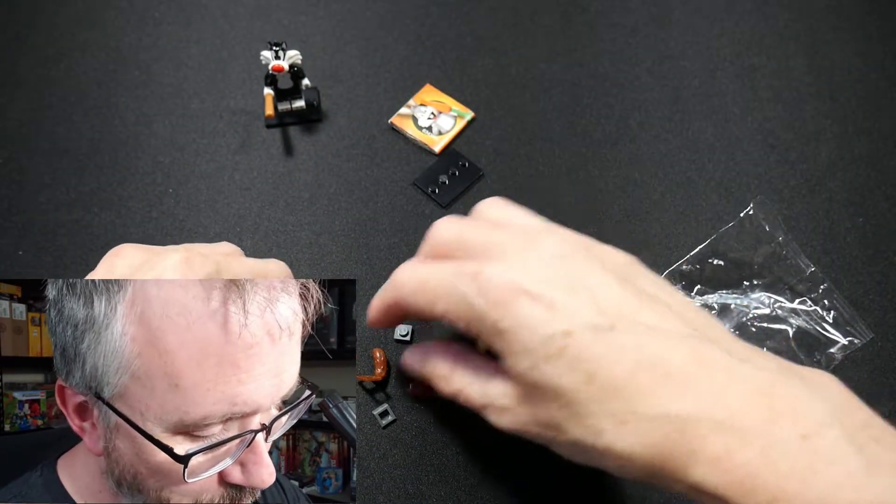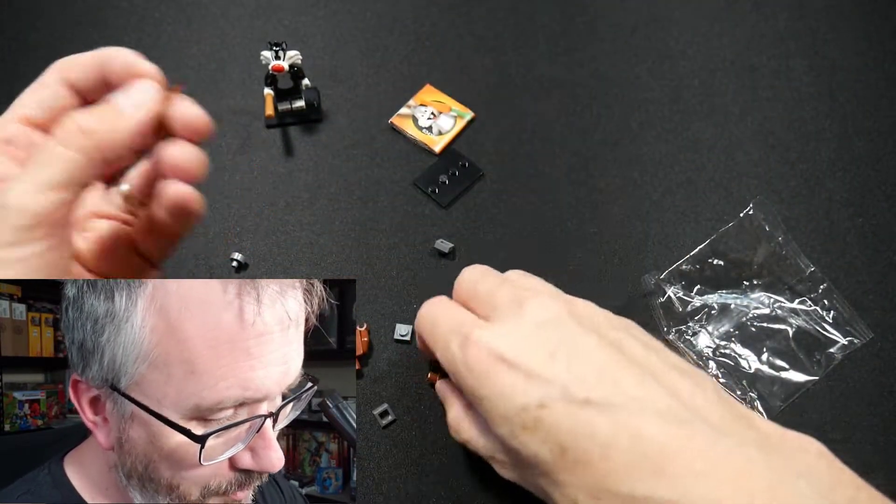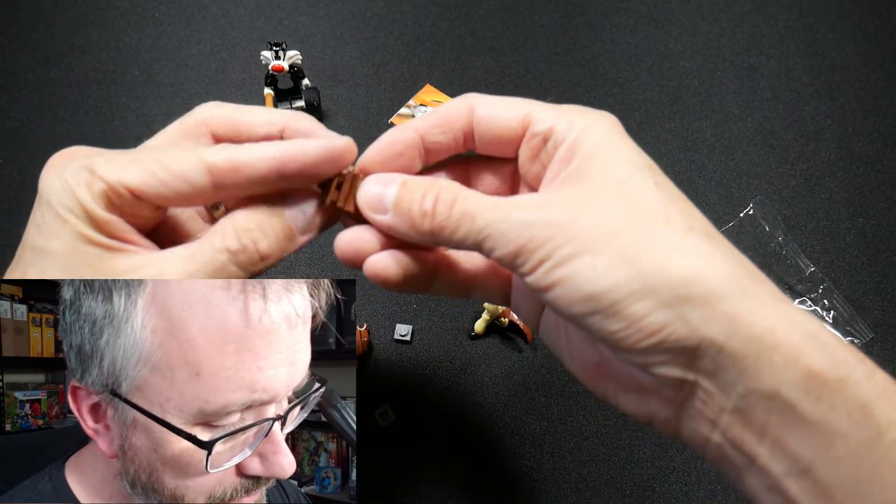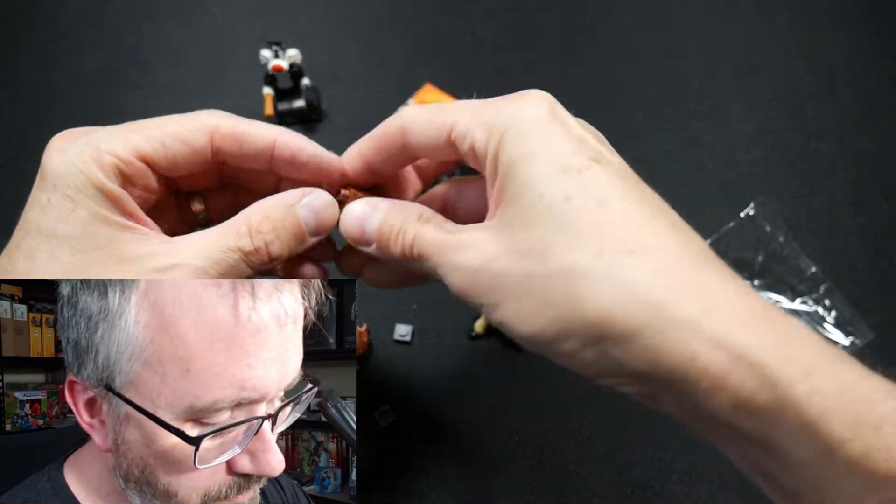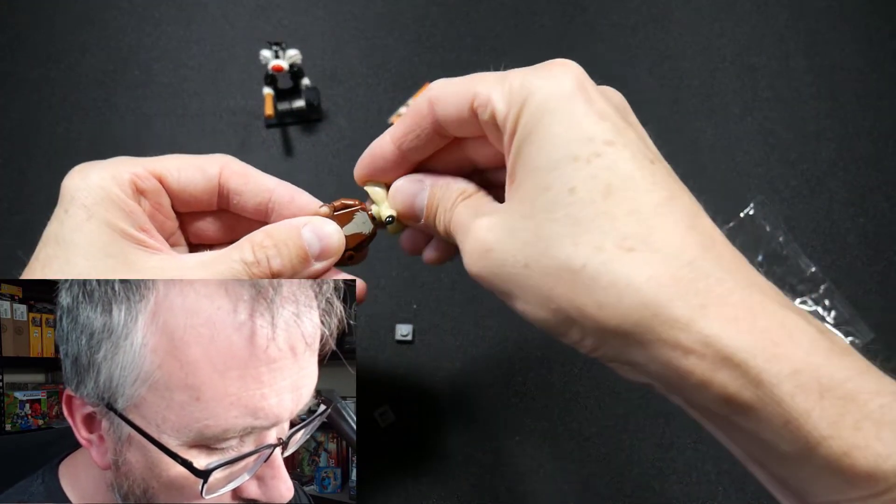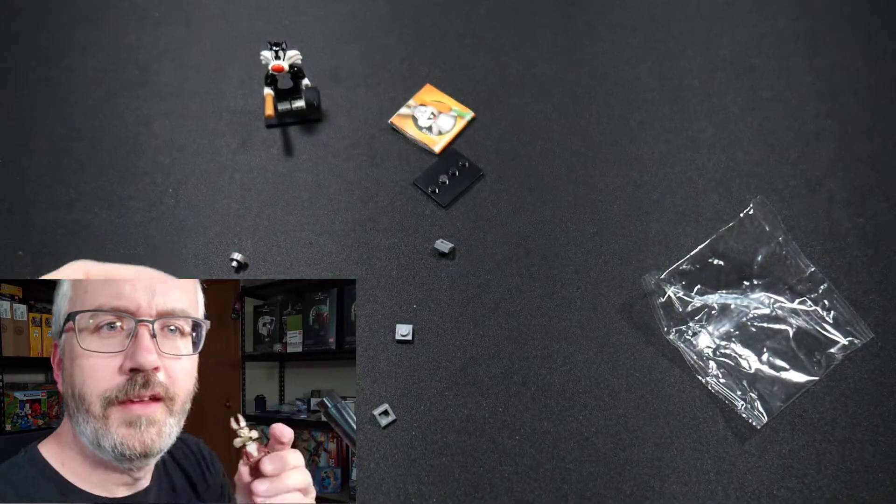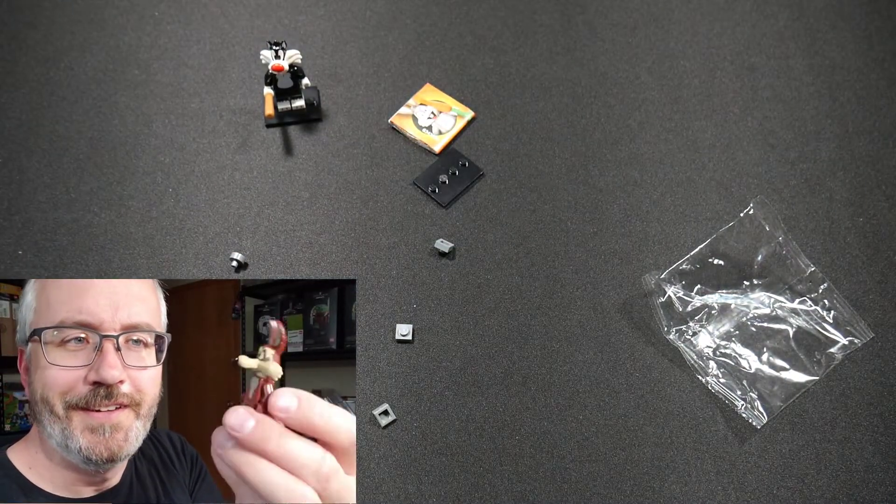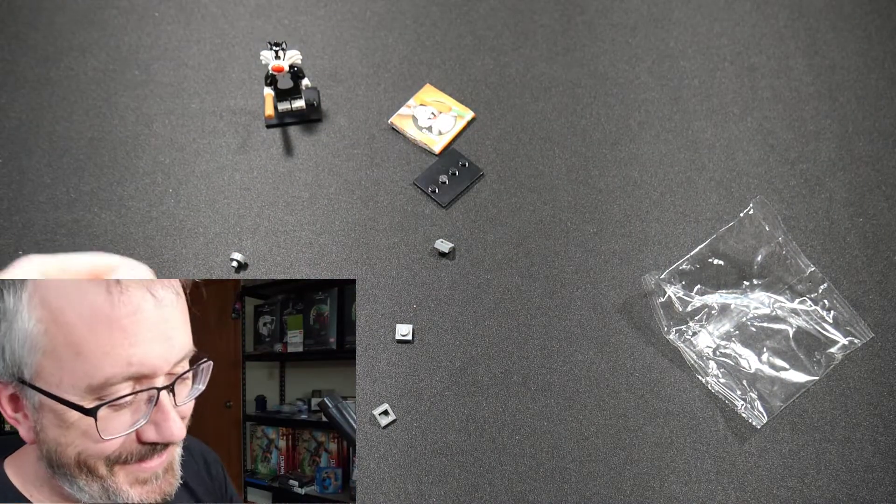All right. Let's get him put together. Don't forget the tail. It's like all these guys have tails. I mean, they are cartoon animals, right? For the most part. Don't forget the tail. I'm not sure what he comes with. There he is. Yeah, he's good. I like him.